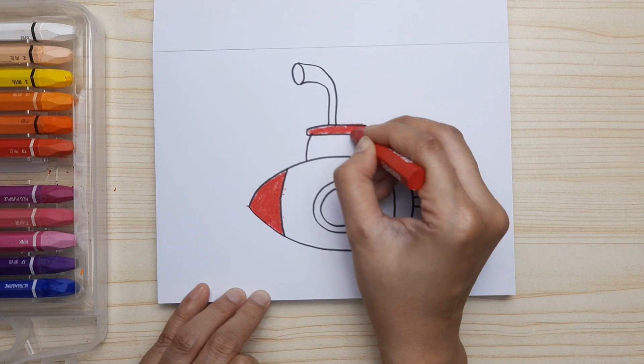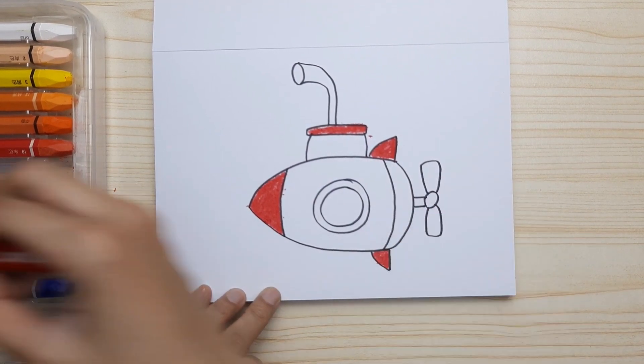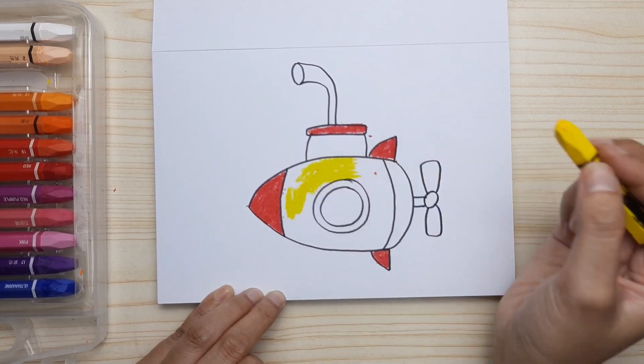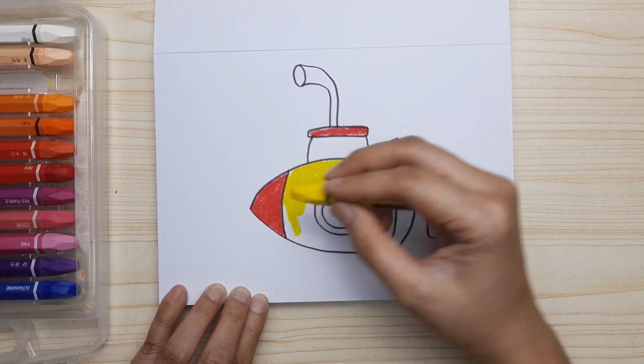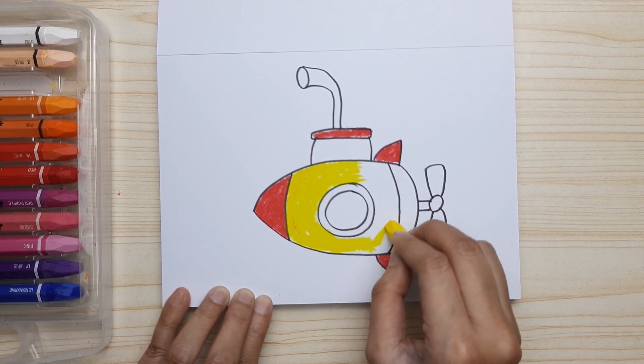As well as the diving plane. Yellow for the body and for the conning tower, and also the frame. It's going to be orange.